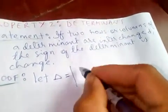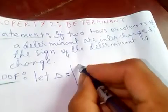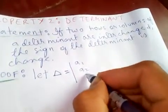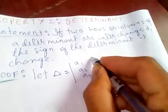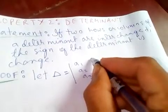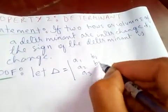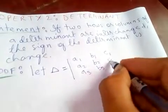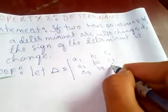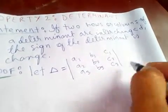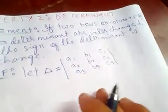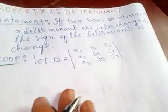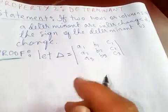Let Delta be our determinant. I'm going to take a 3×3 determinant: a1, a2, a3 in the first row; b1, b2, b3 in the second row; and c1, c2, c3 in the third row. This is our original determinant.